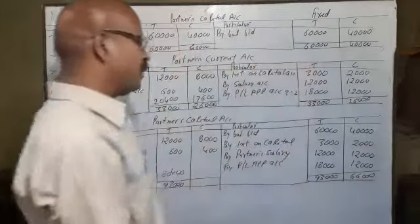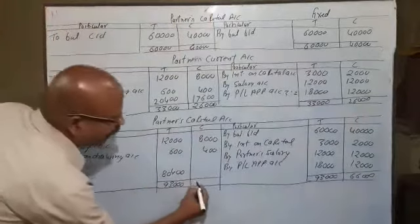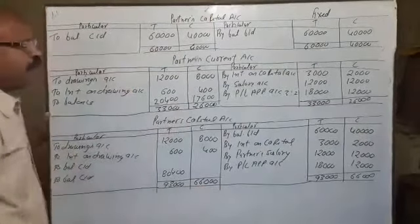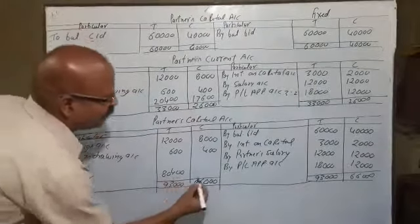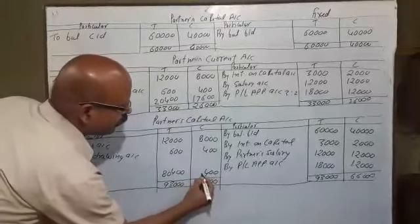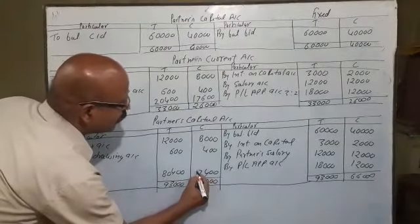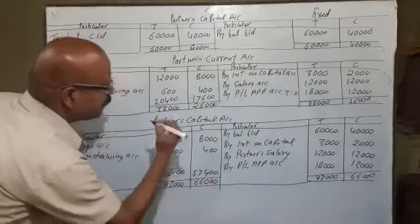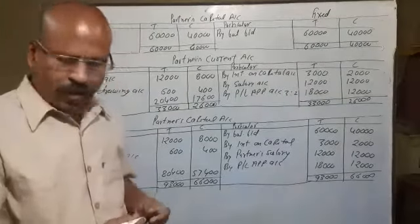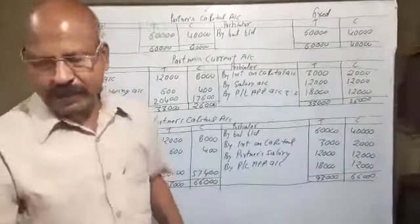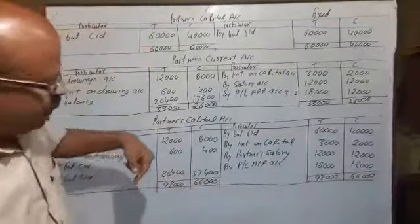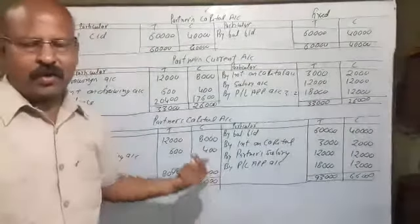Total is 66,000 here and 66,000 here. We will balance this, which gives 57,400. In the other account, the total is different.